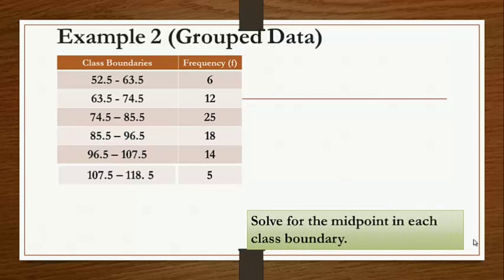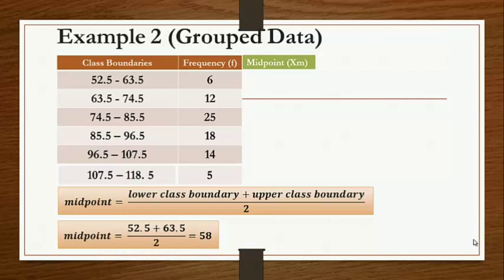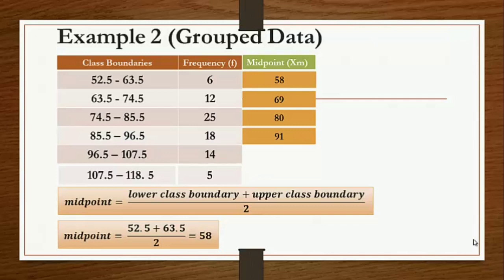We add another column for the midpoint. To solve for the midpoint, use the formula: lower class boundary plus upper class boundary divided by 2. So we have 52.5 plus 63.5 divided by 2, giving a midpoint of 58 for the class boundary 52.5 to 63.5. Do the same for the remaining classes.